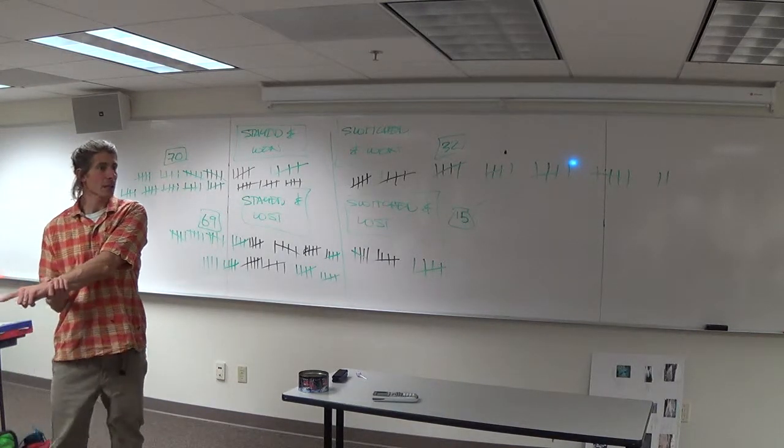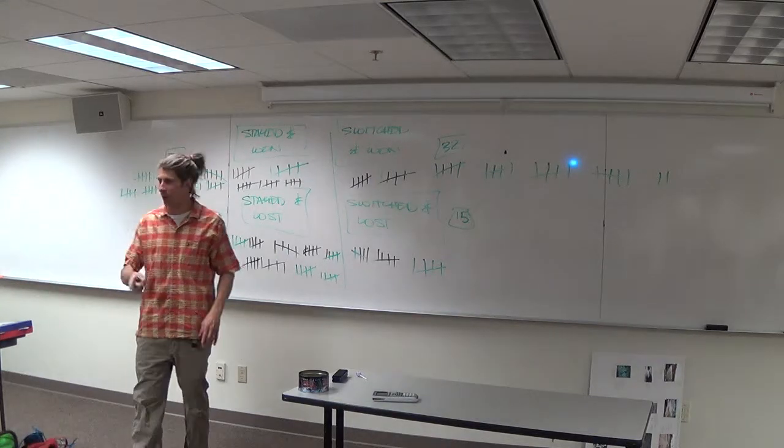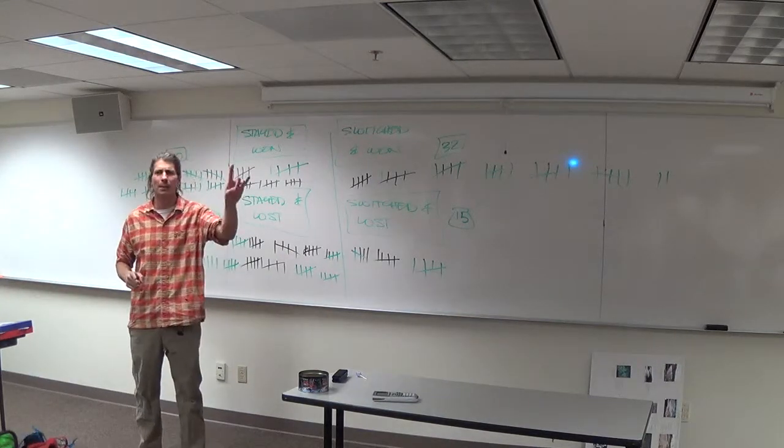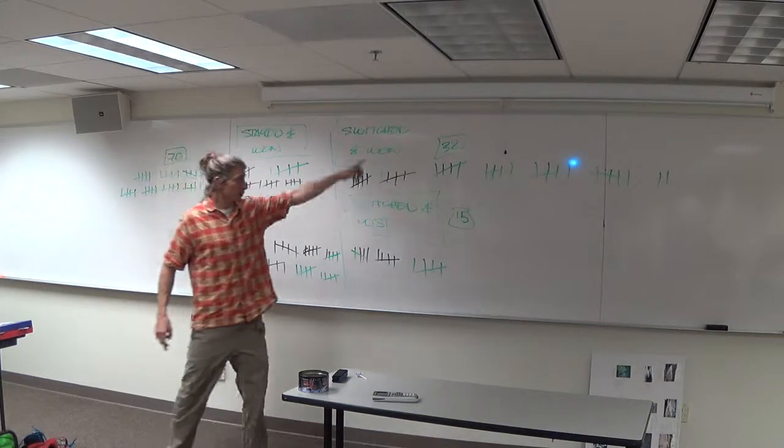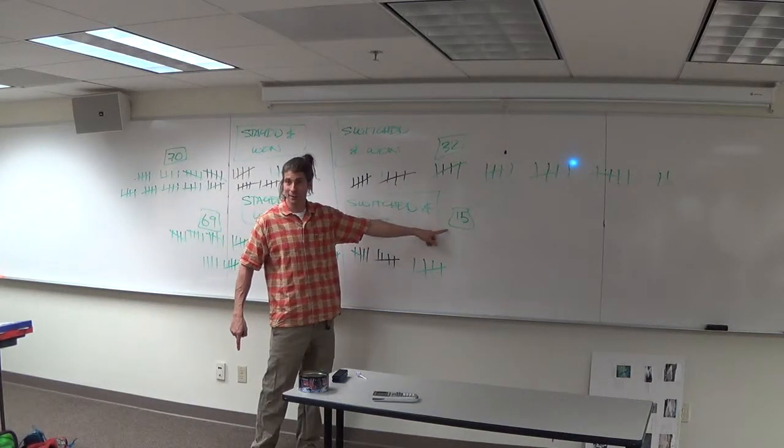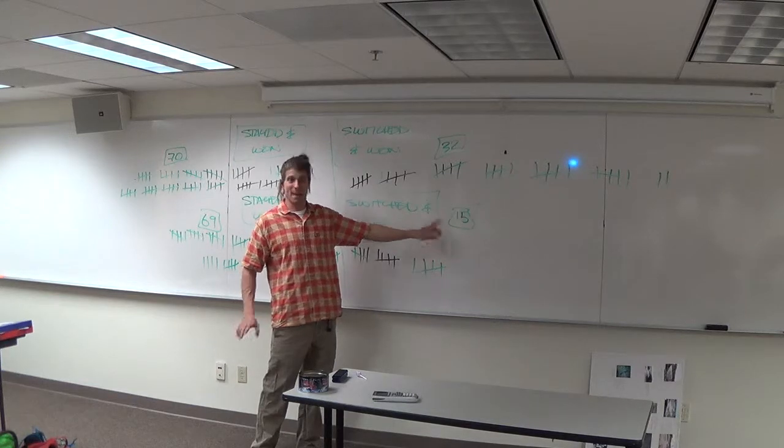So what's the chance you got it right in the beginning? One in three. The chance you guessed the door correctly in the beginning is one in three. Keep that number in the back of your mind. Did we see one in three show up? We did. One in three was right over here. It's the chance of switching and losing. Okay? Keep that in mind.